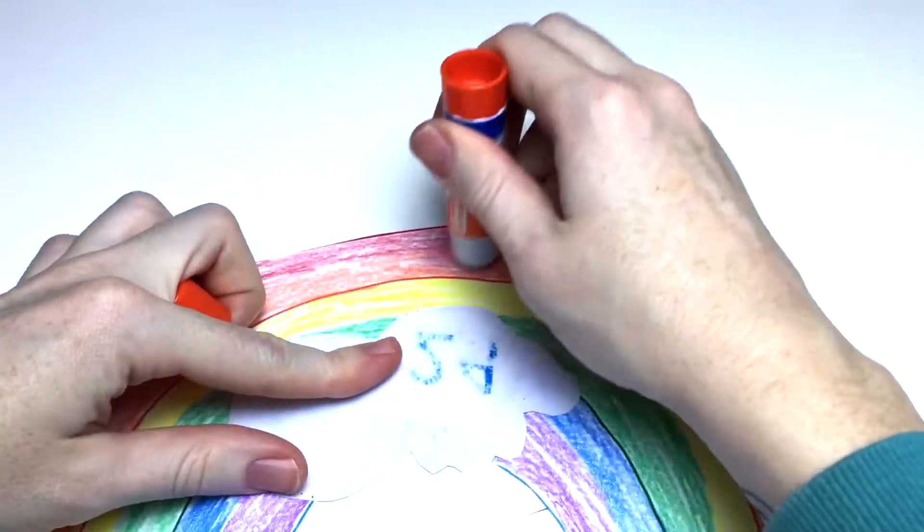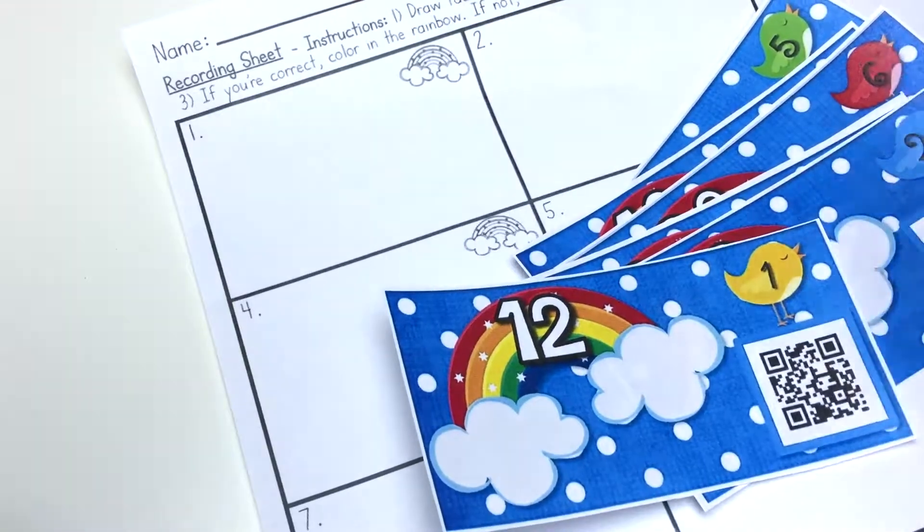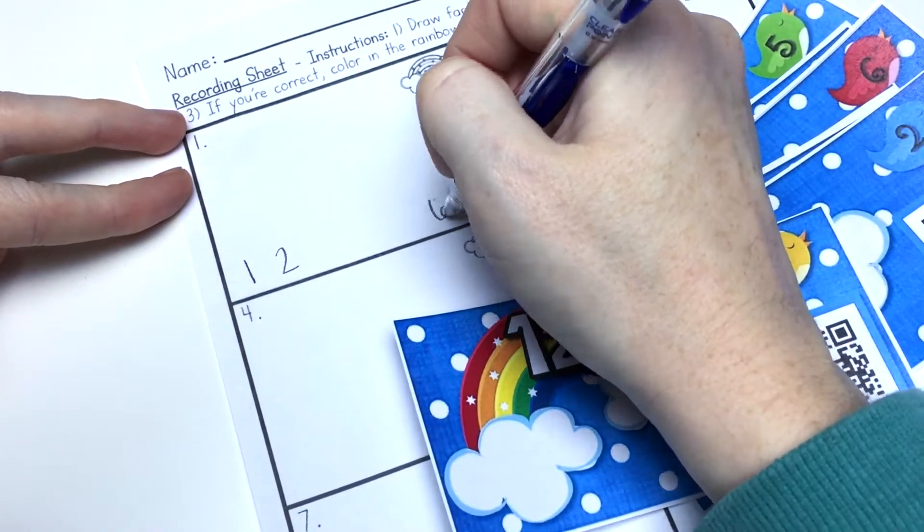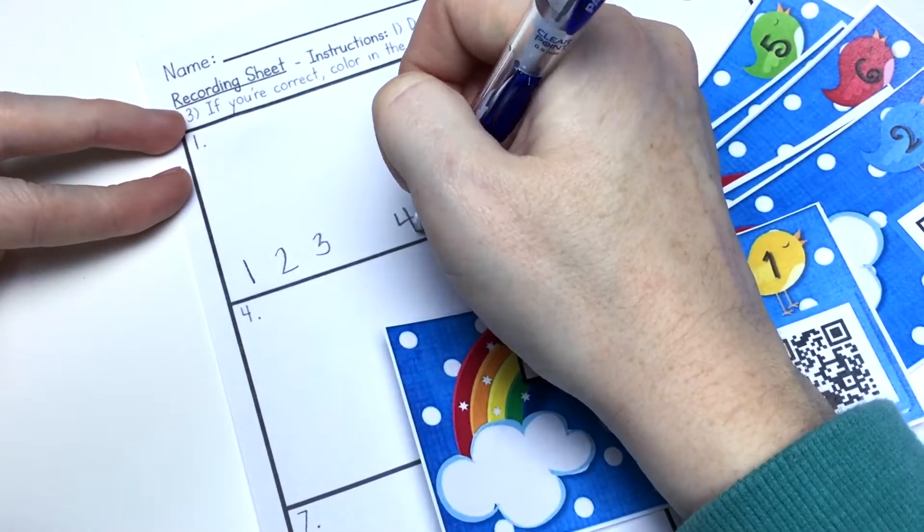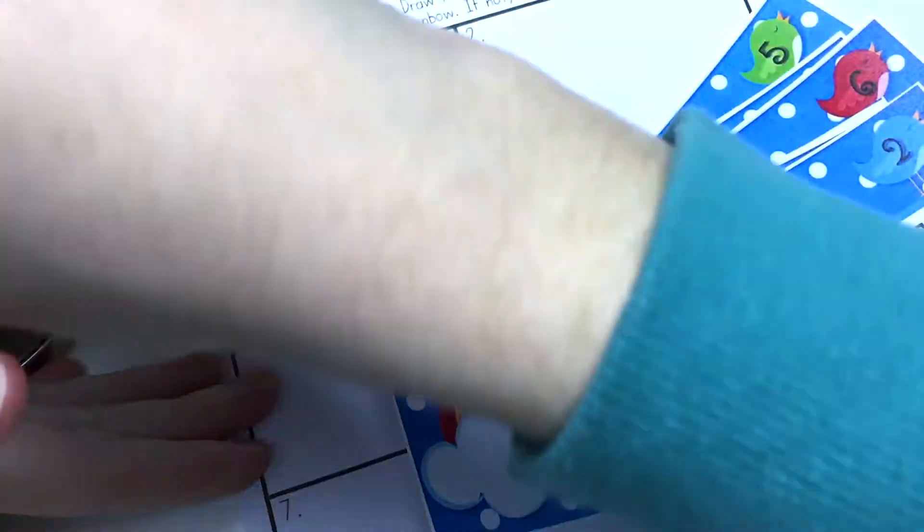QR code task cards are the next activity. I place these around the wall of my classroom, but if you only have one device, you can place it in a math center. It's the same format.